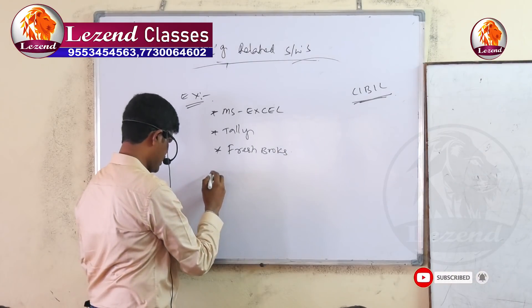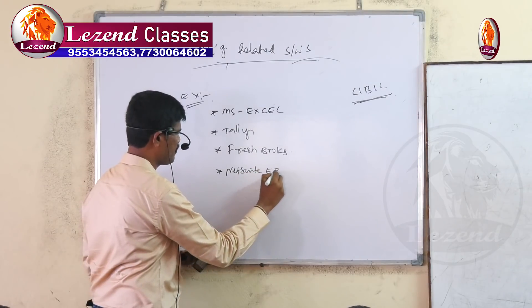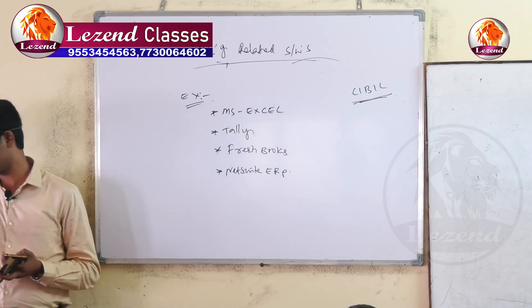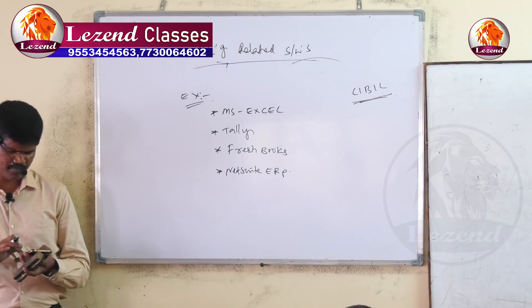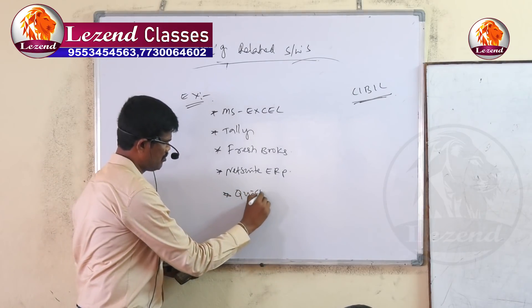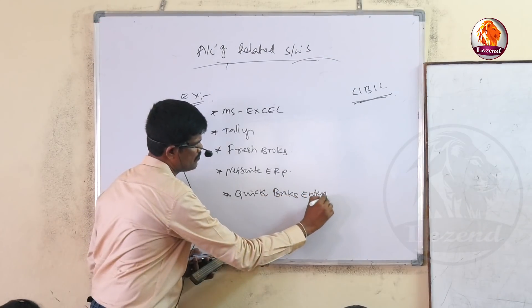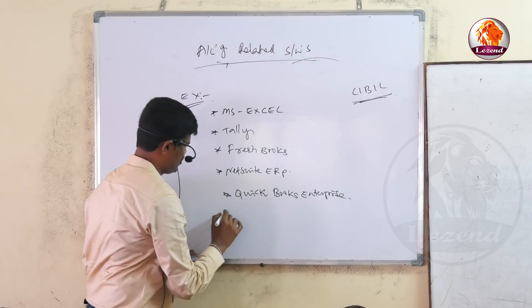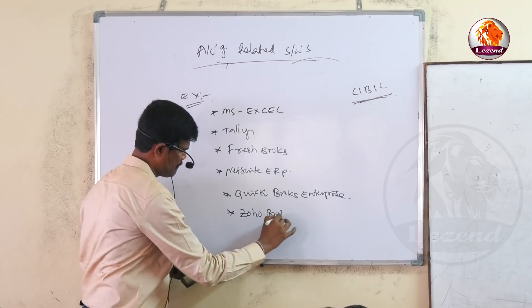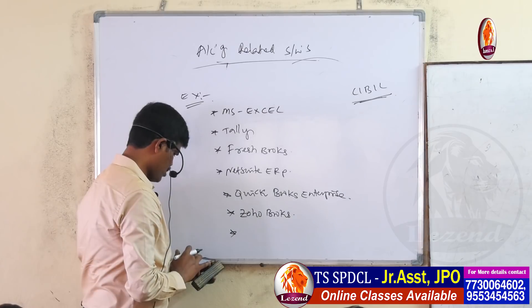Next is NetSuite ERP — that's spelled S-U-I-T — NetSuite ERP. After that, QuickBooks Enterprise, then Zoho Books.